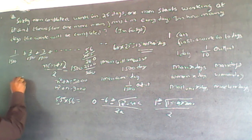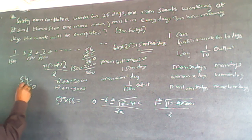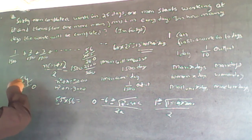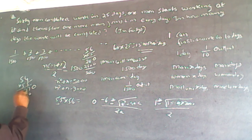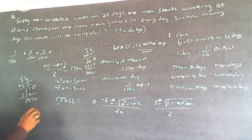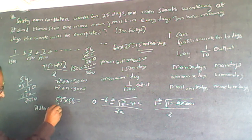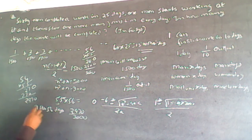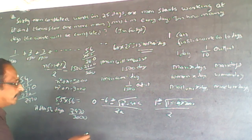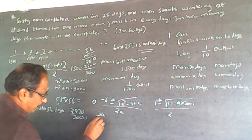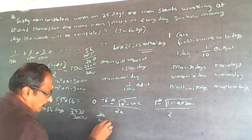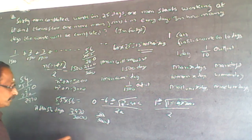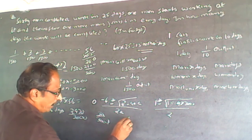Check n = 54: 54 × 55 = 2970. So after 54 days, the work done is 2970/3000. The remaining work is 30/3000, which simplifies to 1/100.